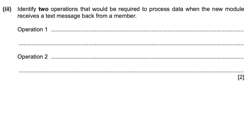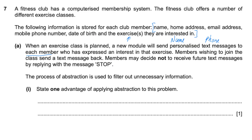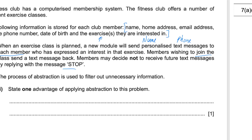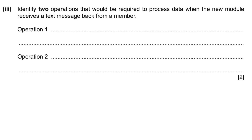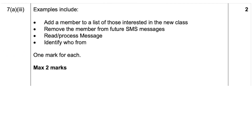Next: identify two operations that would be required to process data when the new module receives a text message back from a member. There are really two options. If a text message is received from the member, they might want to join the class. Otherwise, if it says stop, they might not want future text messages. So those are two operations we'd have to address. Operation one: sign up member for class. Operation two: remove member from contact list. The mark scheme says: add member to a list of those interested in the new class, or remove the member from future SMS messages.